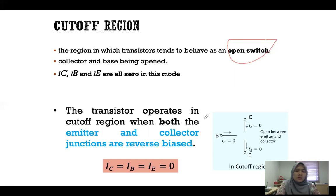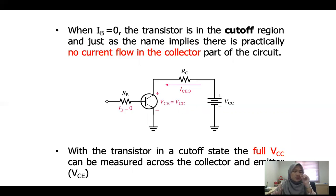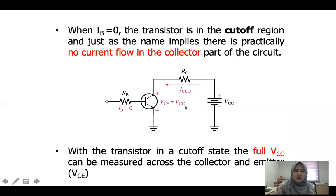The transistor operates in the cutoff region when both the emitter and collector junctions are reverse biased. IC equals IB equals IE equals zero. When IB equals zero, the transistor is in the cutoff region — there is practically no current flow in the collector. With the transistor in the cutoff state, the full VCC can be measured across the collector and emitter, so VCE is approximately equal to VCC because all currents are zero.